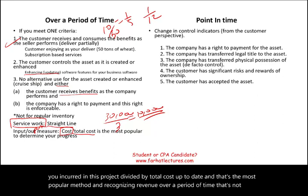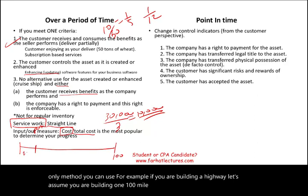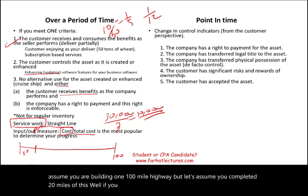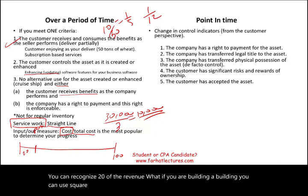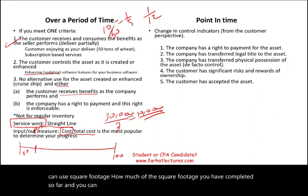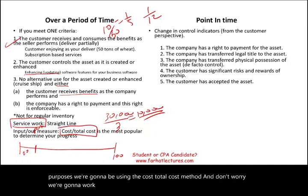That's not the only method. For example, if you're building a 100-mile highway and you completed 20 miles, that's 20% of the project and you can recognize 20% of the revenue. Or for a building, you can use square footage completed. But for accounting exam purposes, we'll be using the cost-to-total-cost method. We'll work an example with a long-term construction project — you need to be familiar with this.